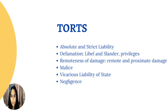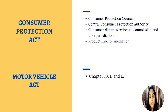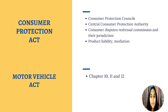There are two minor acts. First is the Consumer Protection Act 2019 — go through the provisions on Consumer Protection Councils and the newly constituted Central Consumer Protection Authority, bare act reading will be sufficient. For Consumer Dispute Redressal Commissions, know how the state, national and district commissions are formed and what their jurisdiction is. Also go through product liability and mediation provisions, which were newly added in the 2019 Act.